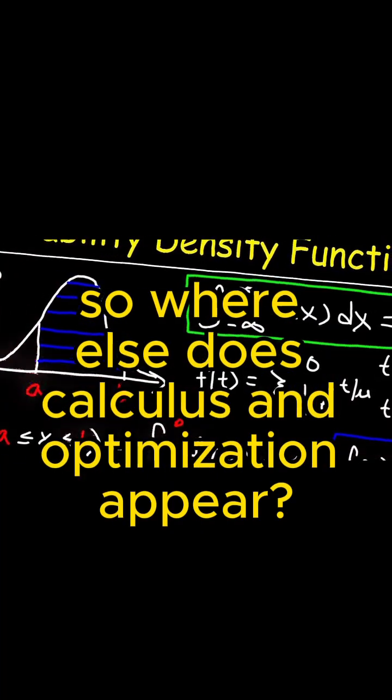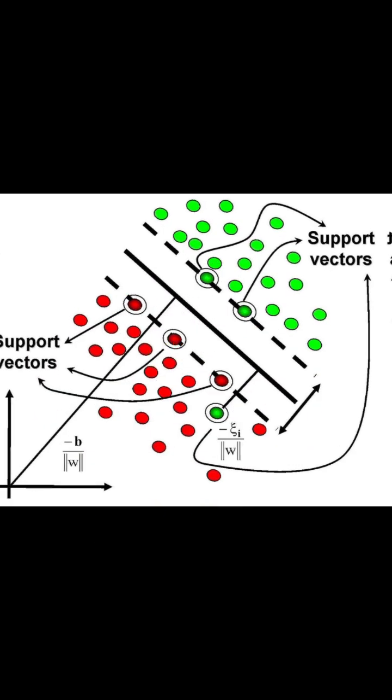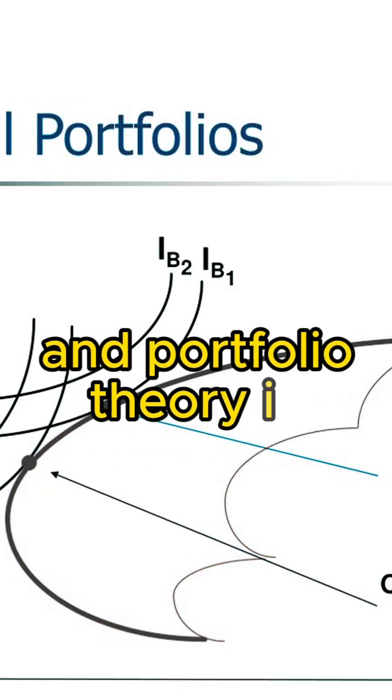So where else does calculus and optimization appear? Some examples are probability and statistics, support vector machines, and portfolio theory and finance.